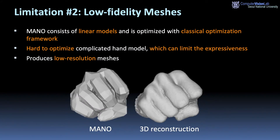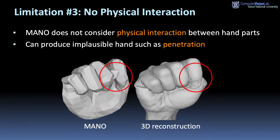MANO consists of linear models and is optimized with a classical optimization framework. Using this framework, it is hard to optimize a complicated hand model, which can limit expressiveness. In addition, it produces low-resolution meshes. MANO does not consider physical interaction between hand parts, and can produce implausible hands such as penetration.